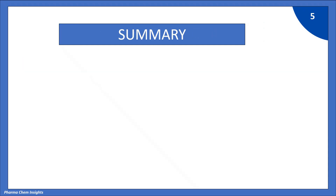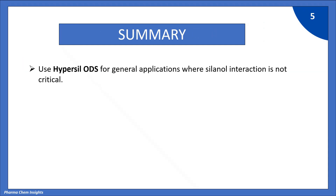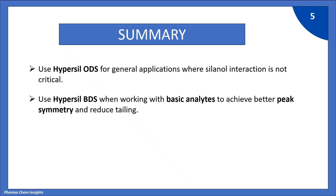Now let us summarize. You can use Hypersil ODS column for general applications where silanol interaction is not critical, while you need to use Hypersil BDS column when working with basic analytes to achieve better peak symmetry and reduce tailing.